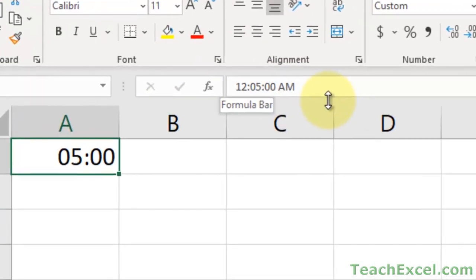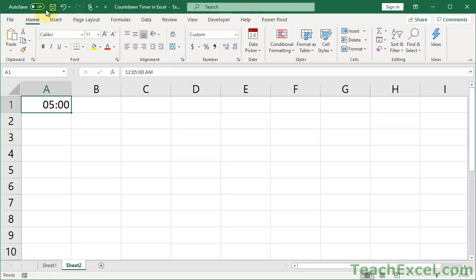Now notice when we have the cell selected in the formula bar you're going to see 12:05 AM. That doesn't really matter in this case, because this time is just used to show the user how much time they have left.